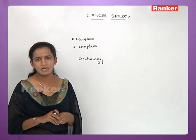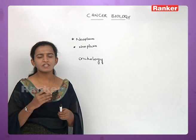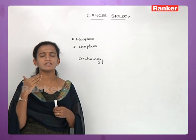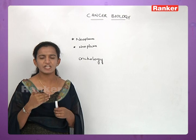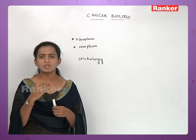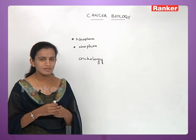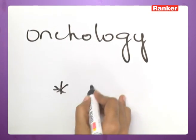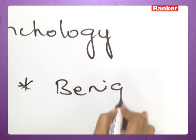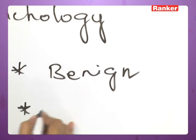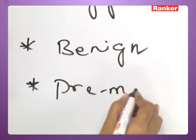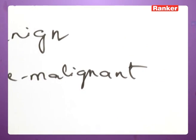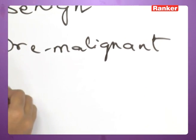There are different sorts of cancers — some more dangerous than others. The three types are: benign tumors, pre-malignant tumors, and malignant tumors.